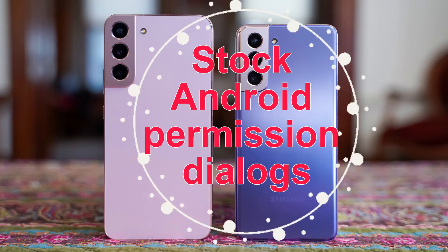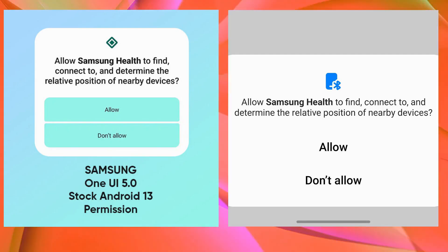Stock Android Permission Dialogues. One of the most surprising aspects of One UI 5 is Samsung's decision to use the standard Android Permission Dialogues. This is in no way a negative aspect, and it is very similar to how Google operates. This could have been done to speed up the update process by not changing things that don't need to be changed in Android, or it could simply be that Samsung hasn't changed it yet in One UI 5. Future betas will reveal the answer shortly.